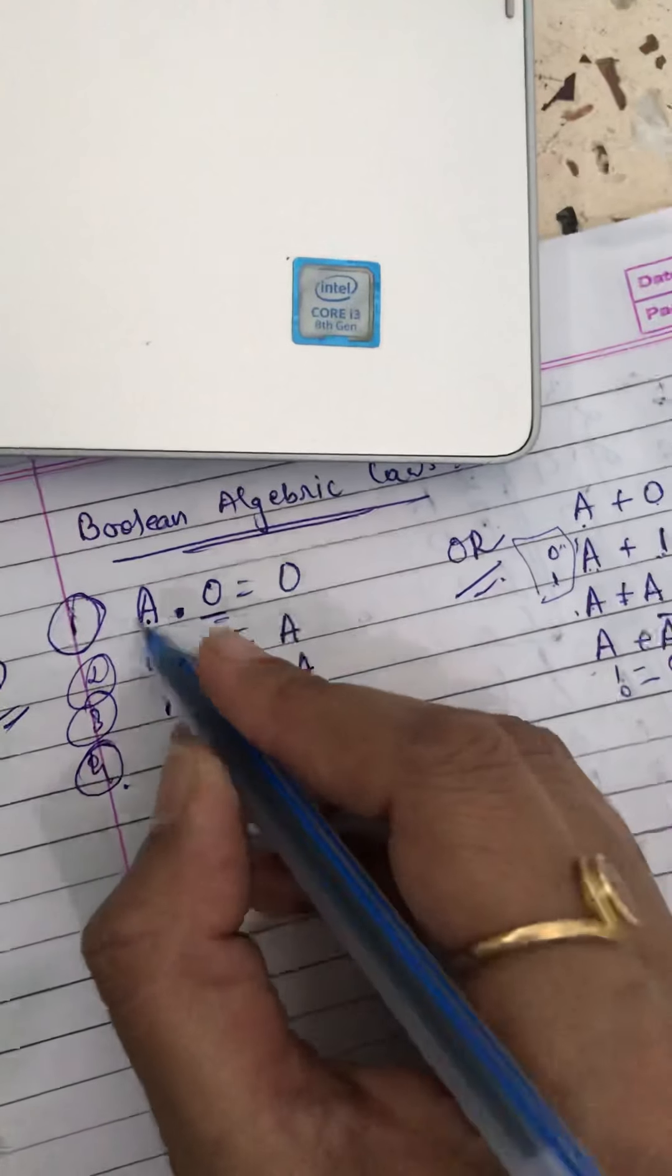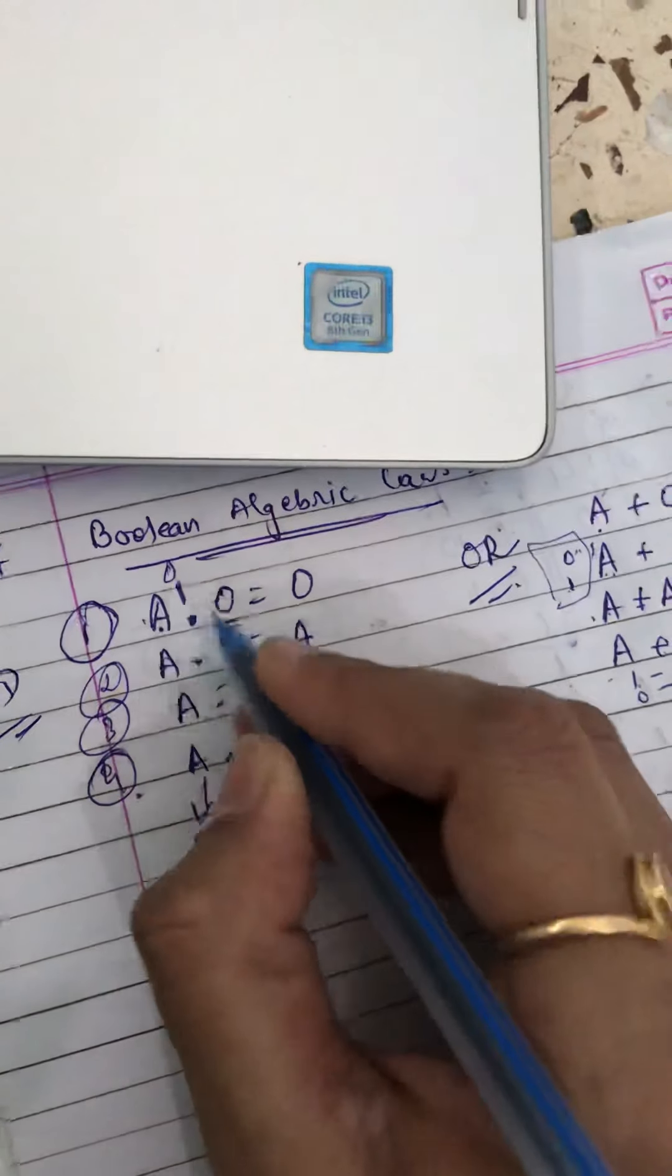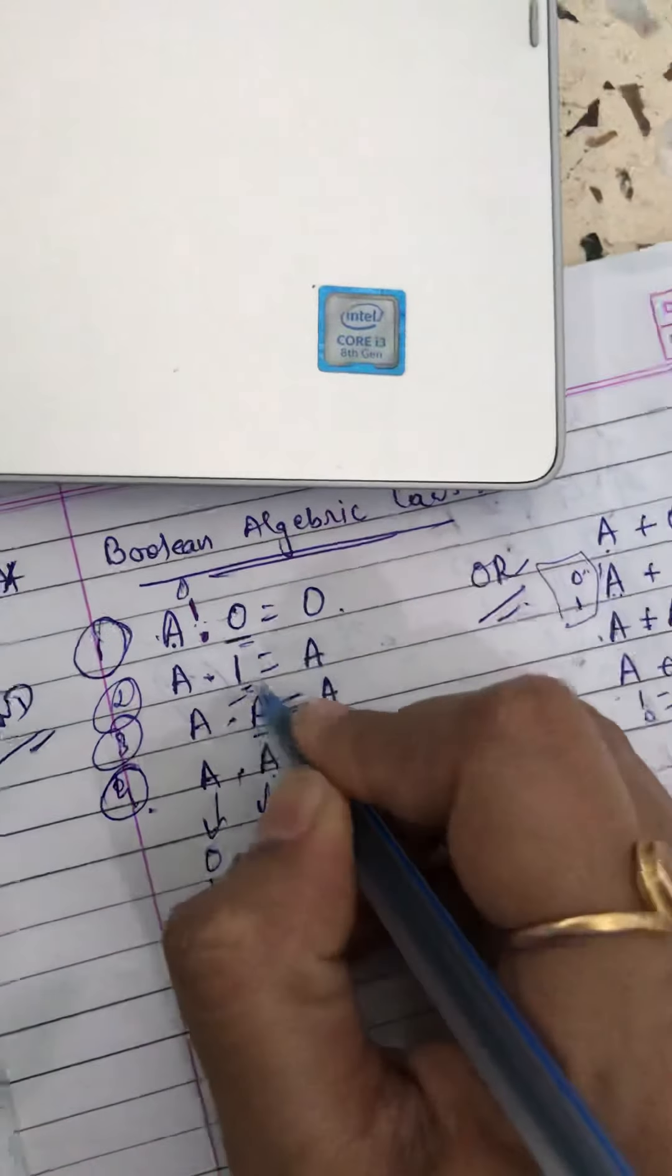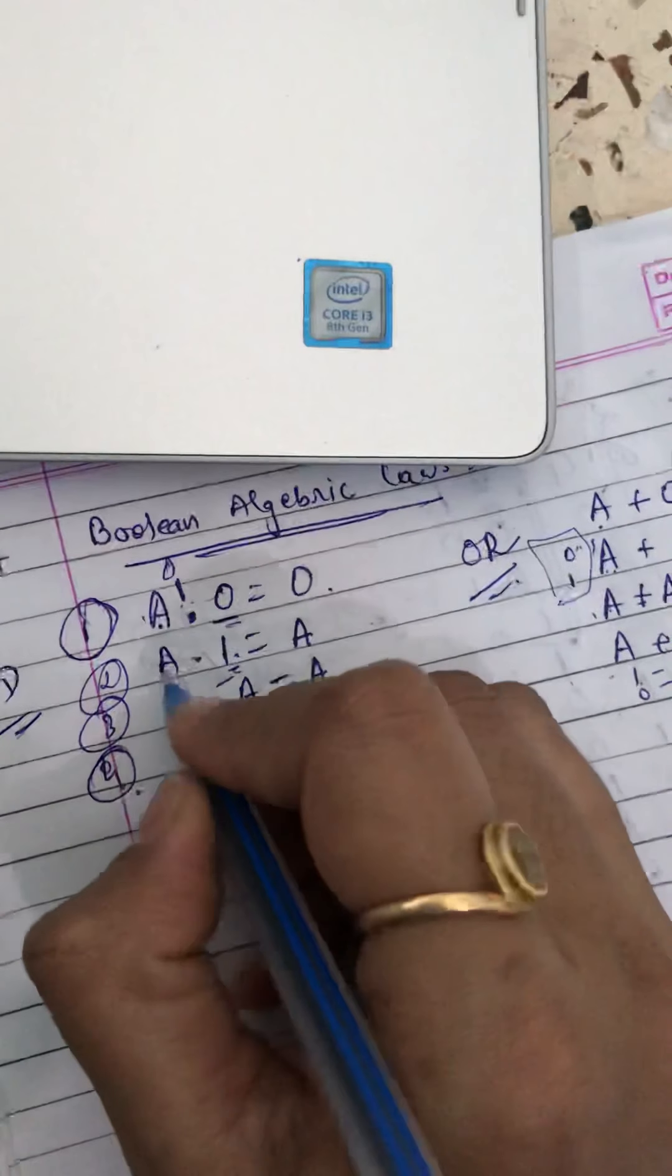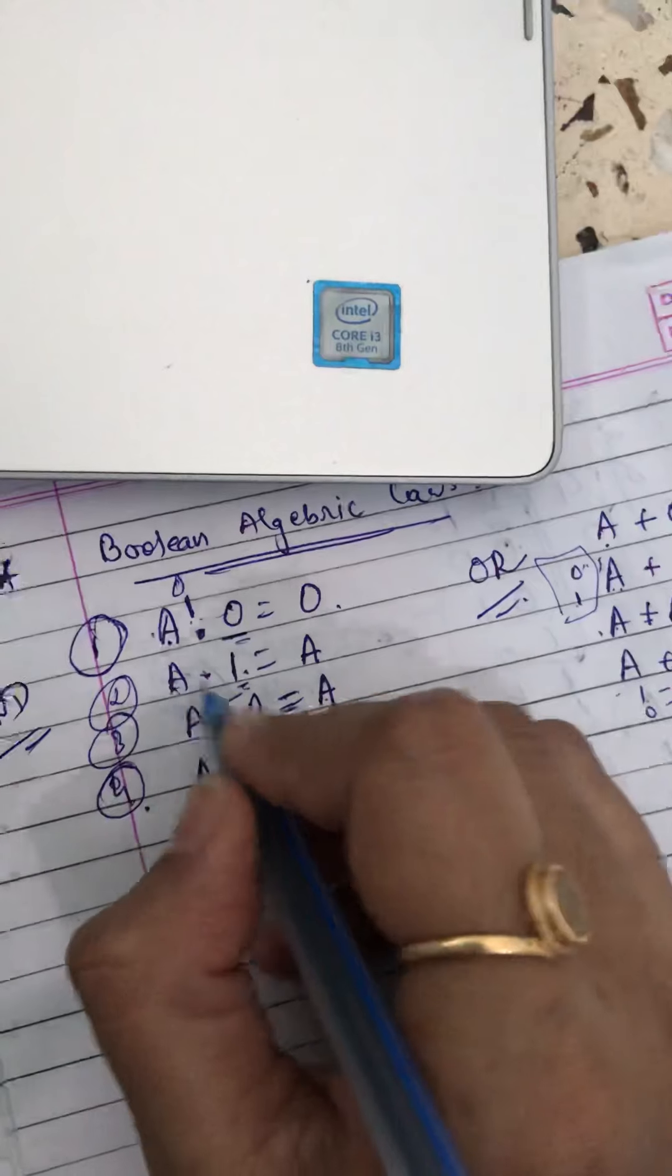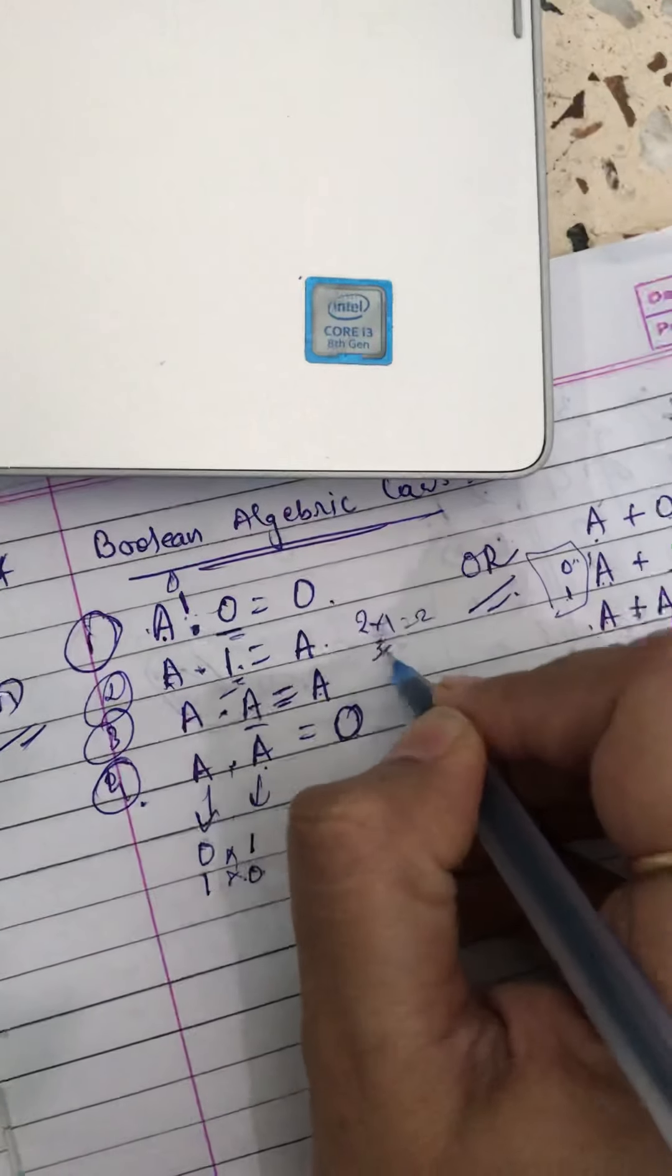A dot zero: if A is either zero or one, any number's multiplication with zero gives you zero. If you are doing the multiplication with one, you will get the same number. Like two times one is two, three times one is three, so you will get the same number.